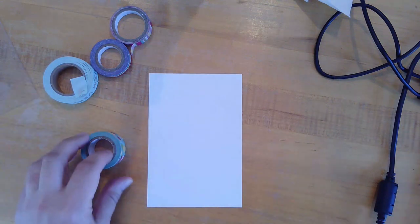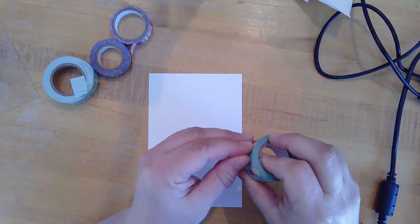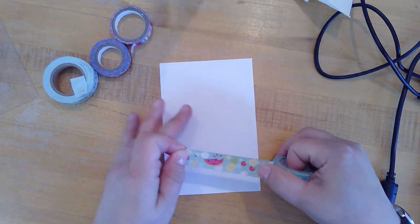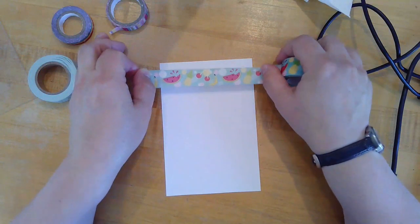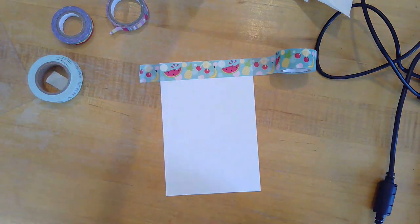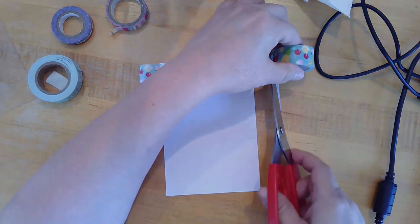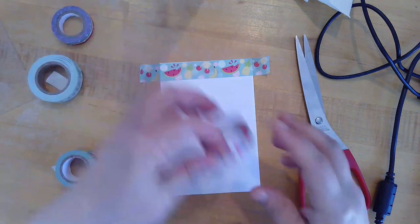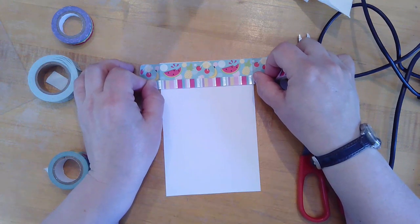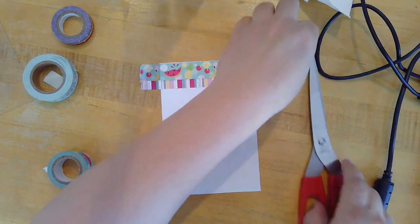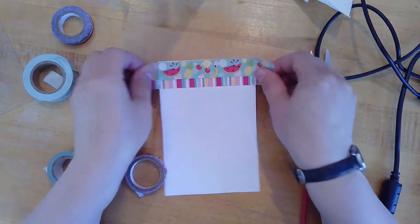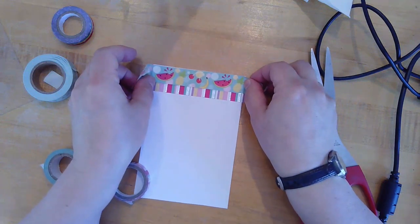And then you're going to lay out your washi tape. The neat thing about washi tape is that you can gently reposition it without tearing the paper if you need to. Start with some fruit for summery design. I'd like it to be straight, but I'm not going to go crazy if it's a little off. And it's all right if it overlaps the paper a little bit. You're going to trim that when you're done.